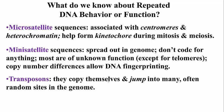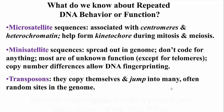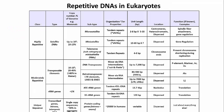Transposons are repeated because they can copy themselves and jump into many, often random, sites in the genome, and they are part of the middle repetitive or middle COT value DNA. Here's a table summarizing the types and characteristics of repetitive DNAs, comparing transposable elements, ribosomal RNA genes, transcribed genes, introns, DNA between genes, and satellite DNAs — showing which categories are highly repetitive, moderately repetitive, or more or less unique, with examples and known functions where applicable.